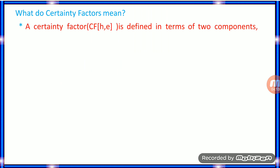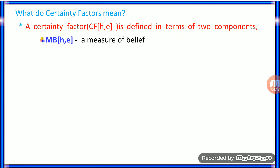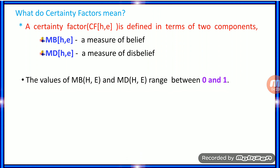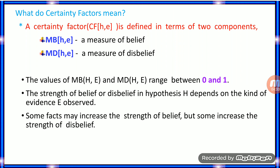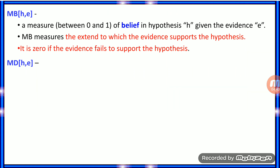What does CF mean? The certainty factor is defined in terms of two components: MB (measure of belief) and MD (measure of disbelief). The values of MB and MD range between 0 and 1. The strength of belief or disbelief in hypothesis H depends on the kind of evidence E observed. Some facts may increase the strength of belief while others increase the strength of disbelief. Measure of belief is a value between 0 and 1 representing belief in hypothesis H given evidence E, measuring the extent to which evidence supports the hypothesis.